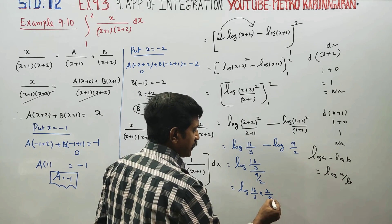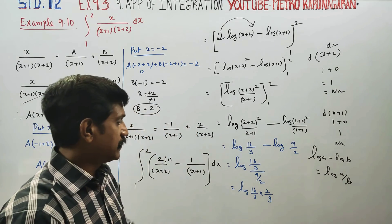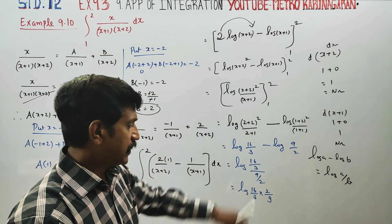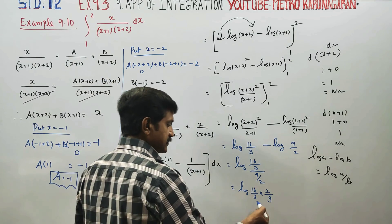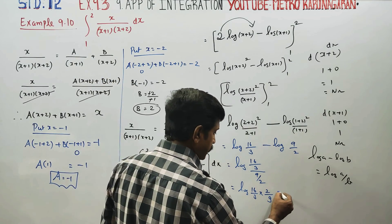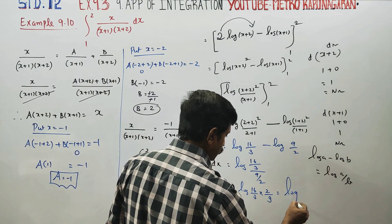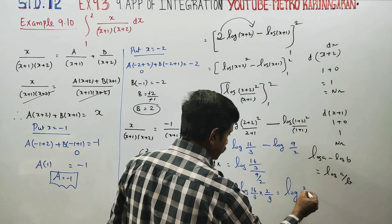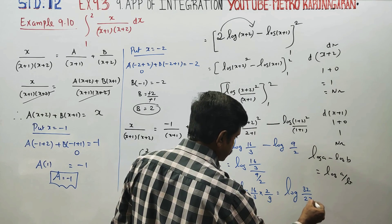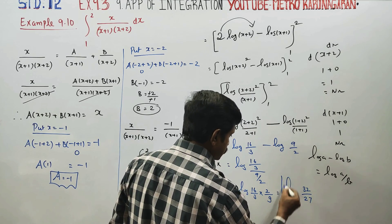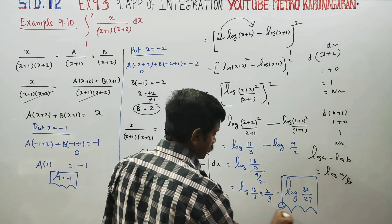Applying log A minus log B equals log(A/B): logarithm of (16/3) divided by (9/2), which equals logarithm of (16/3) multiplied by the reciprocal (2/9). Simplifying, the final answer is logarithm of 32 by 27.